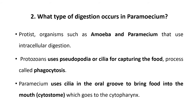Protozoa use pseudopodia or cilia for capturing food; this process is called phagocytosis. In case of Paramecium, cilia surrounding the body are useful for capturing food, while in case of Amoeba, finger-like projections called pseudopodia capture the food. Taking food inside the body is called phagocytosis. Paramecium uses cilia in the oral groove to bring food into the mouth, that is the cytostome, which leads into the cytopharynx.